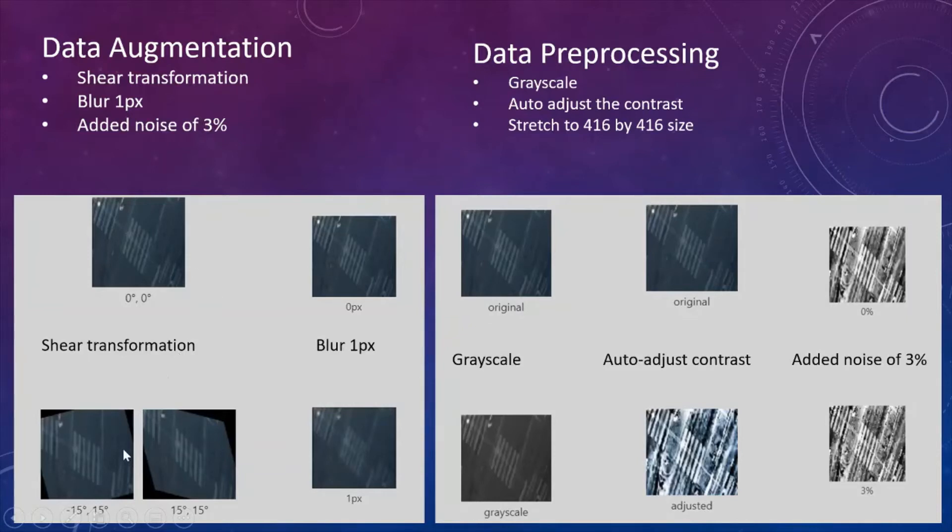And we applied data augmentation. We used shear transformation, plus or minus 15 degrees. That helps us with different angles of view, because we can see that some road markings were taken under different angles. That's why some will have some shear, some will not. But applying to all the data shear transformation can tackle this problem. And also we applied blur. And we also stretched all our dataset to 414 by 414 size.